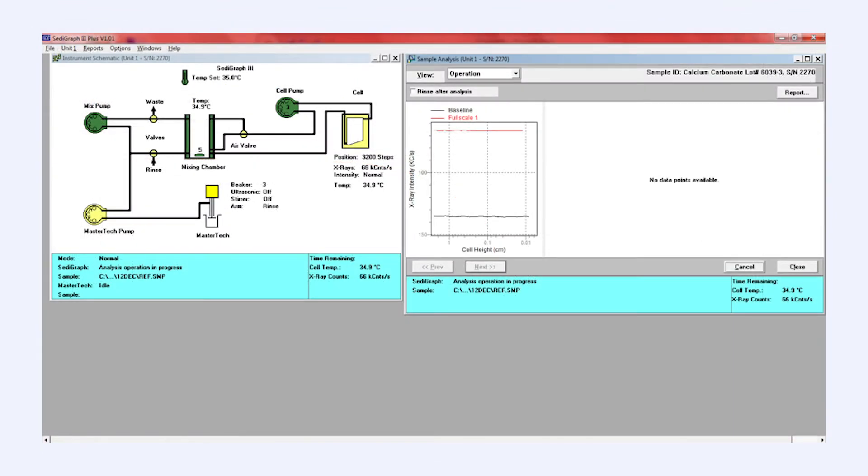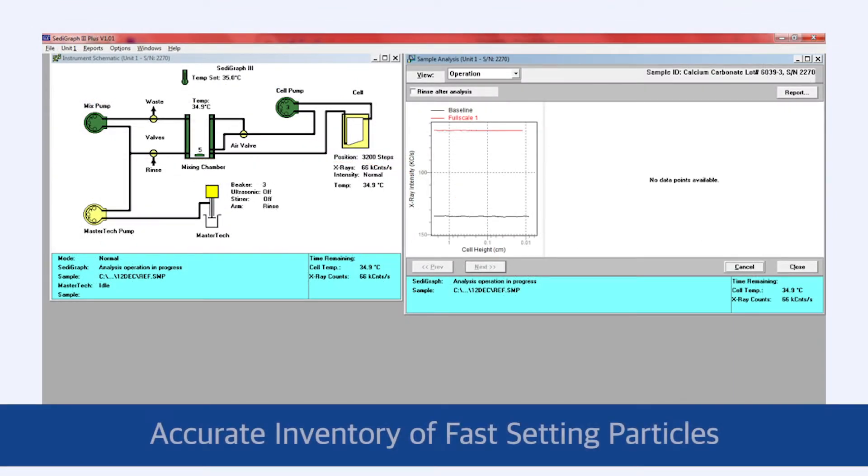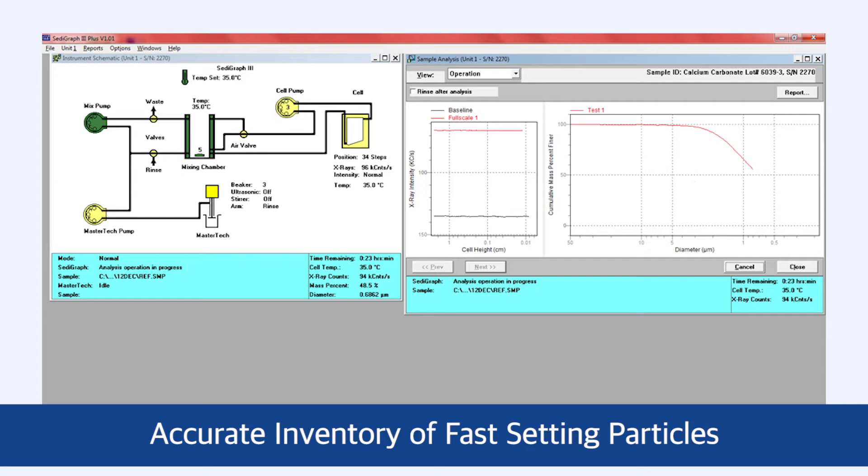Scanning the sedimentation cell from bottom to top allows for accurate inventory of fast-settling particles while minimizing the time required to resolve the separation of fine particles.